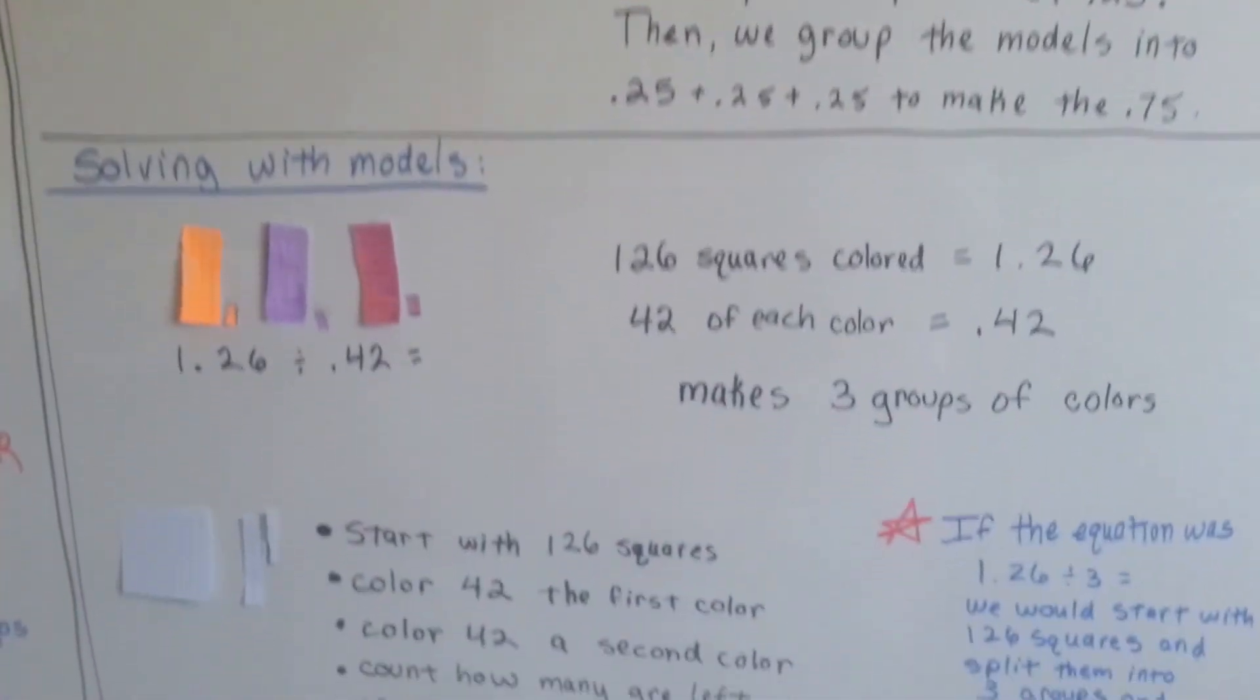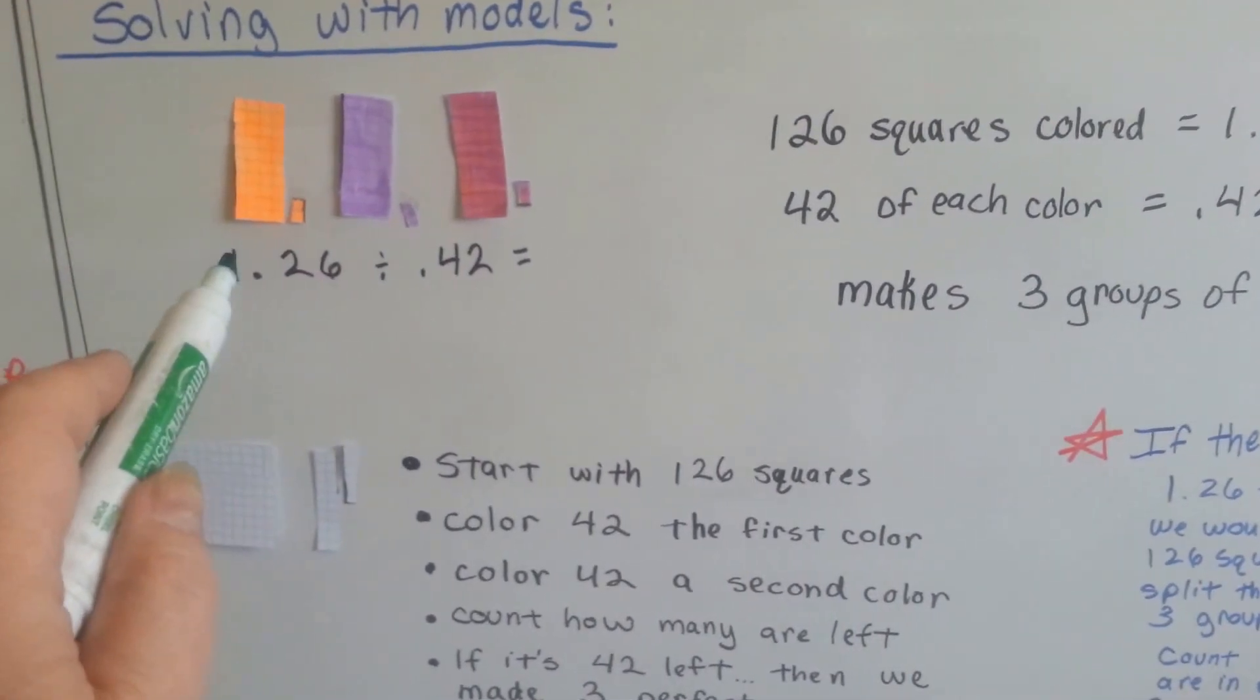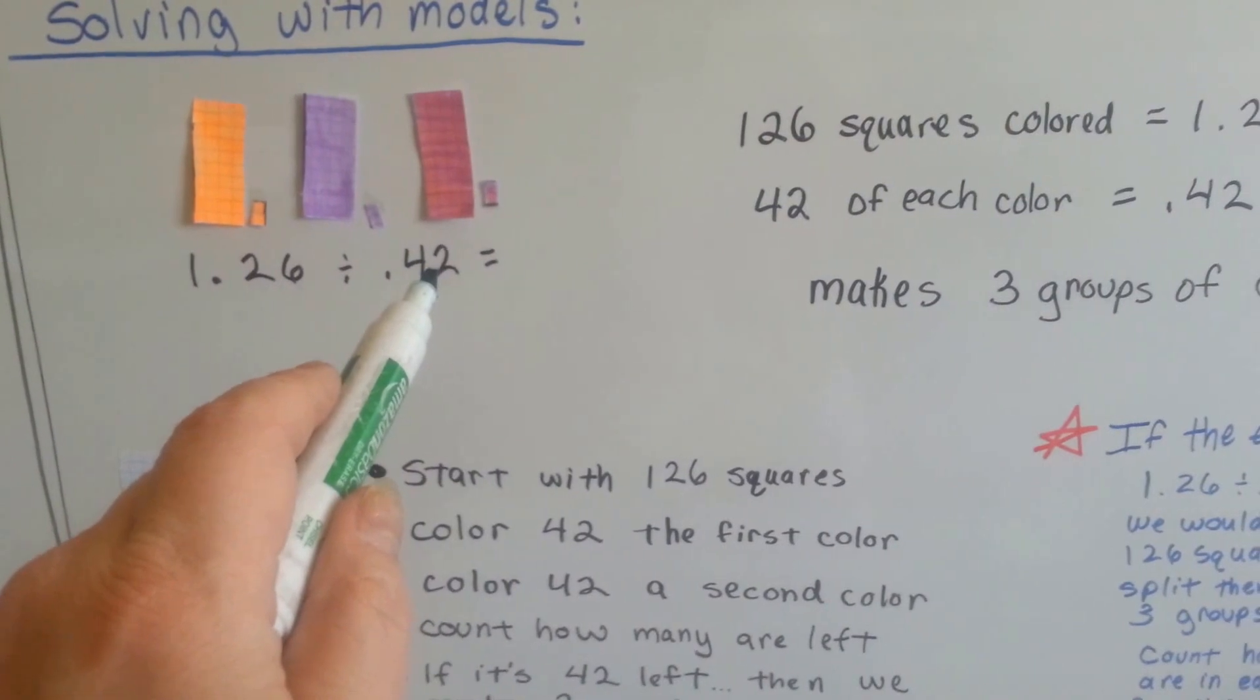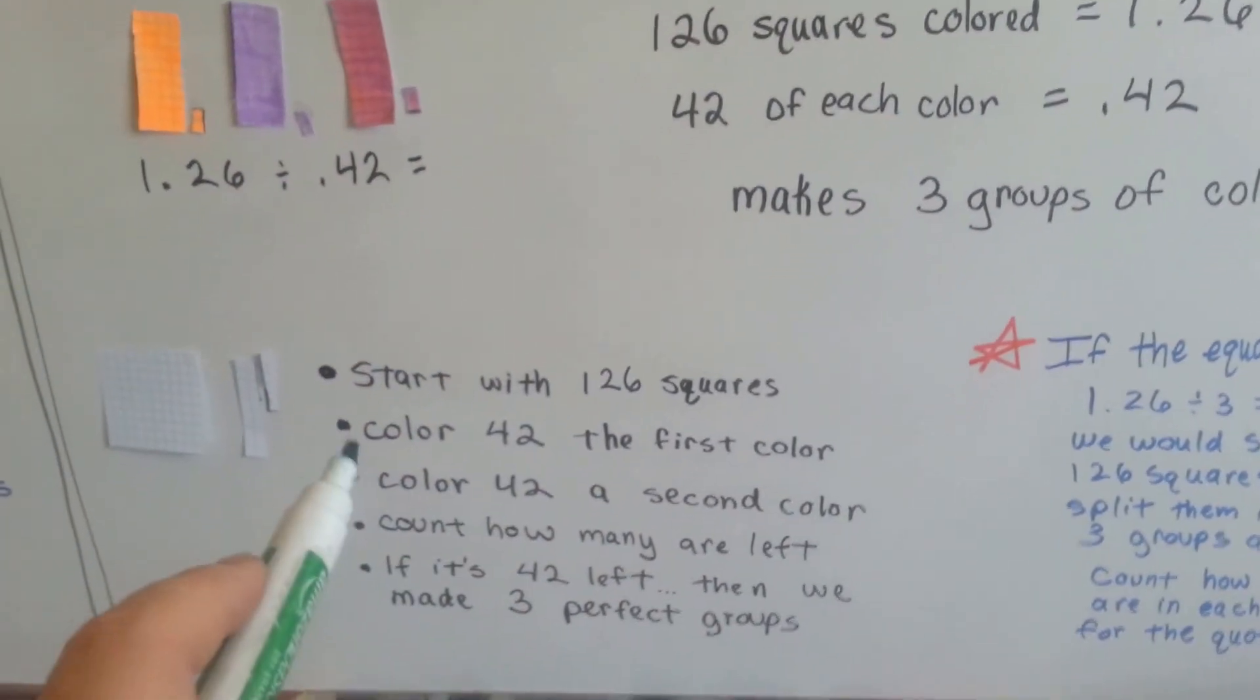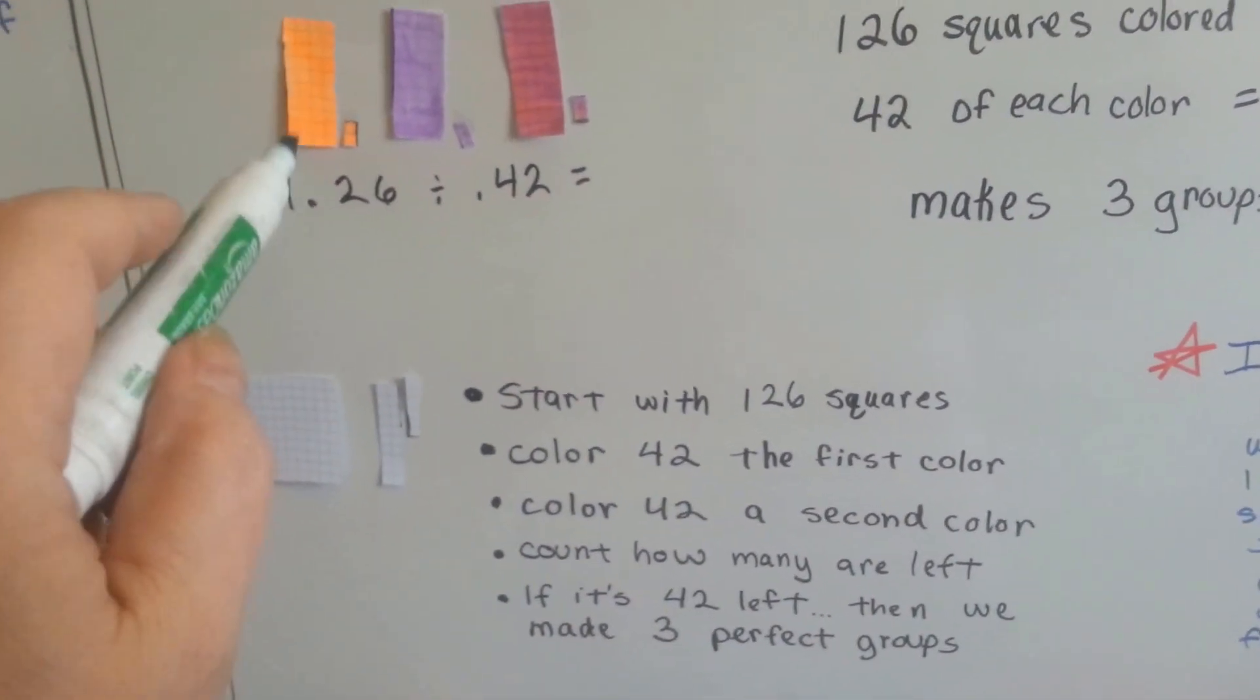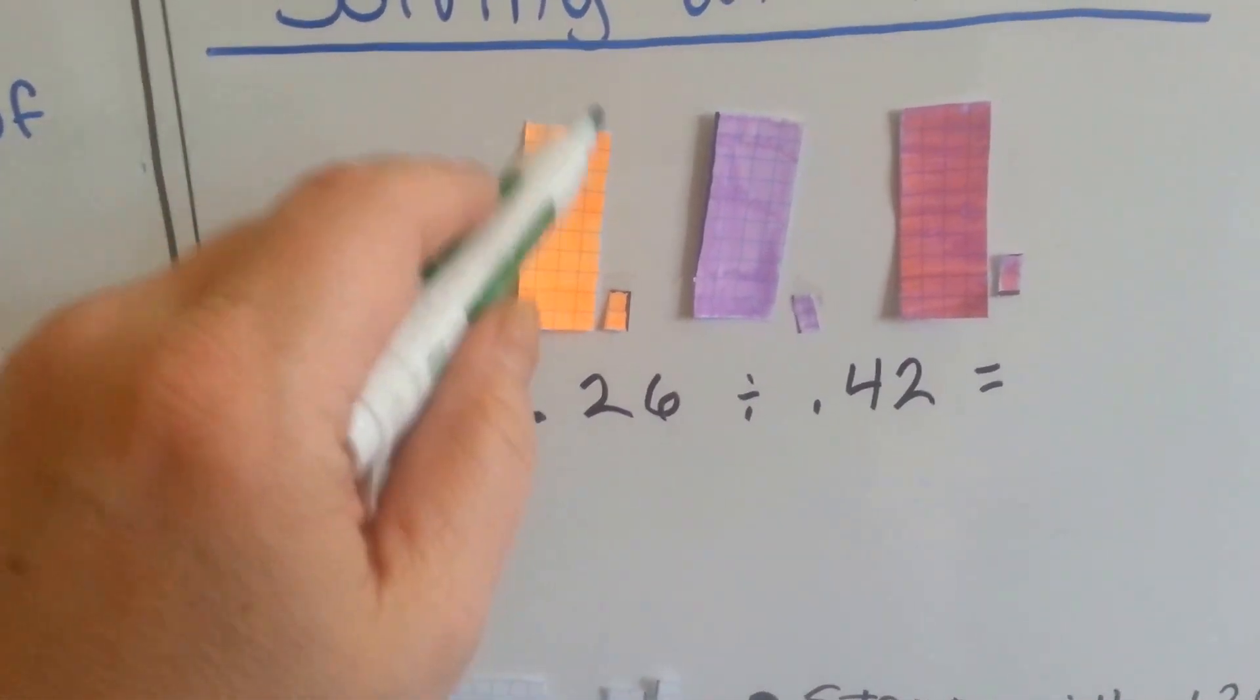So take a look at this. If we wanted to make models for this equation, 1.26 divided by 0.42, we start with 126 squares, okay? What we do is we color 42 one color. So if you look very closely, I've got ten, twenty, thirty, forty, and two colored orange.